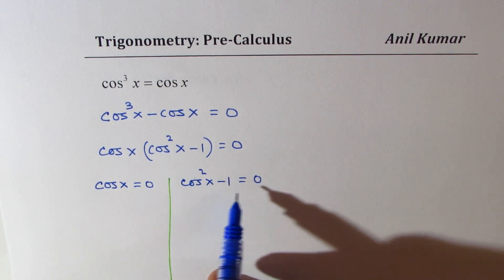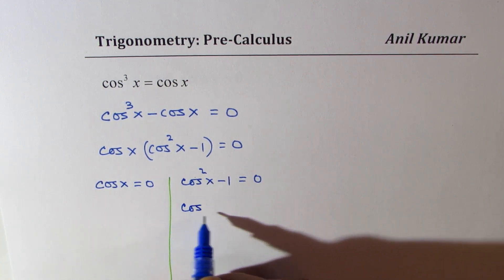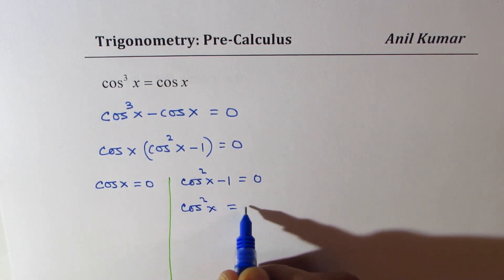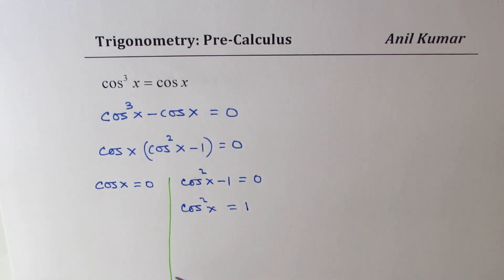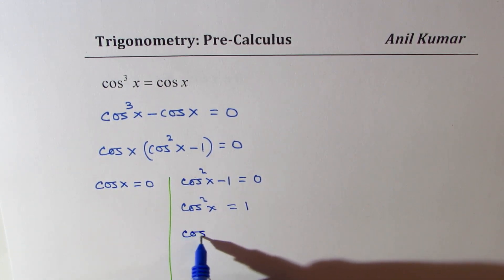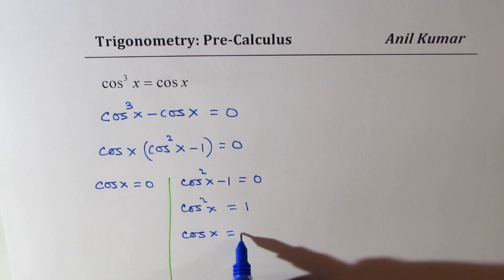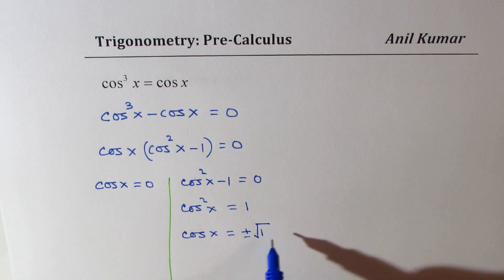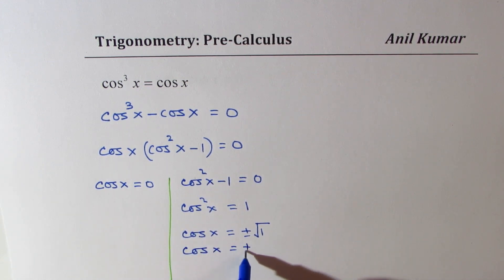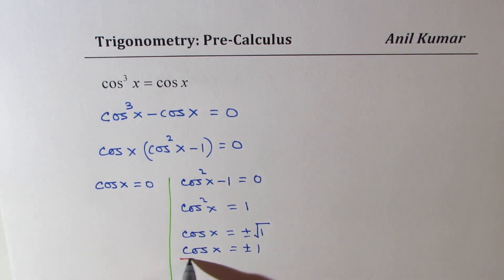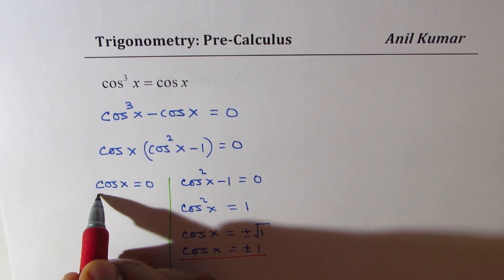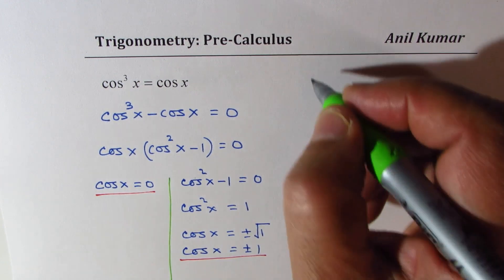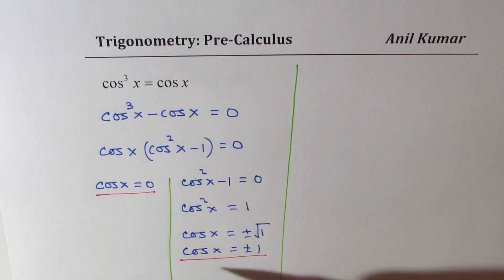When cos²x − 1 = 0, it means cos²x = 1, so cos x = ±1. So we are looking for two conditions: cos x = ±1 and cos x = 0.